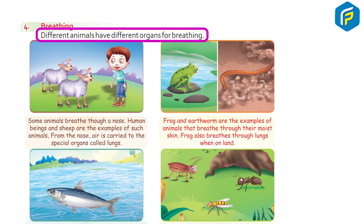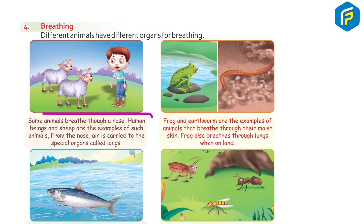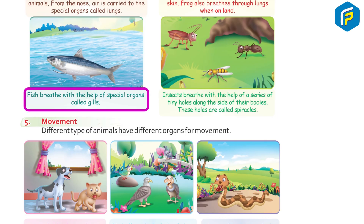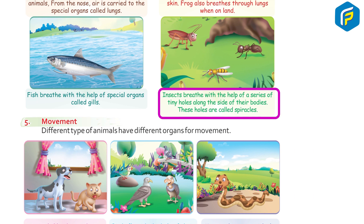Different animals have different organs for breathing. Some animals breathe through a nose — human beings and sheep are examples, where air is carried to a special organ called lungs. Frogs and earthworms breathe through their moist skin. Frogs also breathe through lungs when on land. Fish breathe with the help of a special organ called gills. Insects breathe with the help of a series of tiny holes along the sides of their bodies called spiracles.